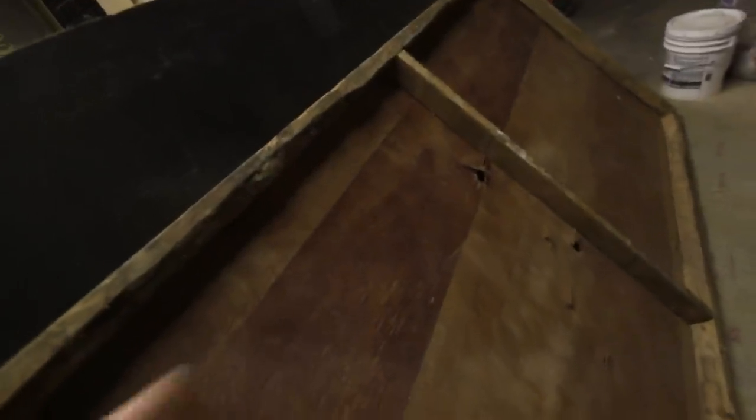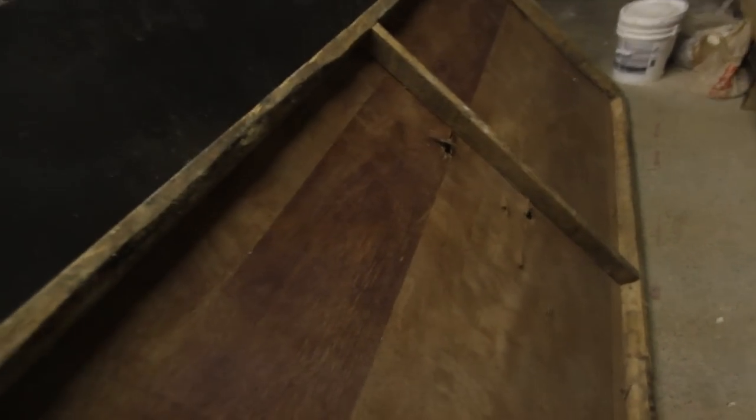First thing we do is we basically take this panel, go through the whole thing, and take out any screws and any nails. And we also, if the panel doesn't have a center support beam, we do that. Just makes it a lot thicker.